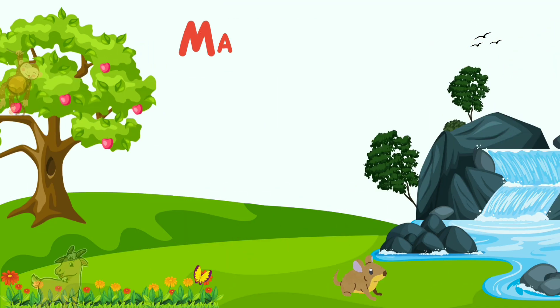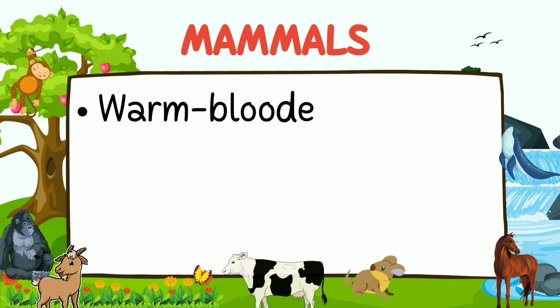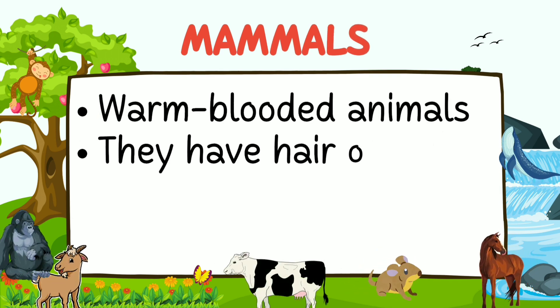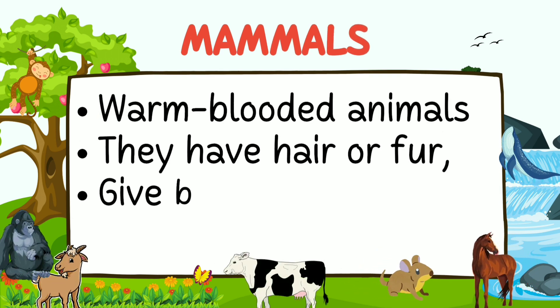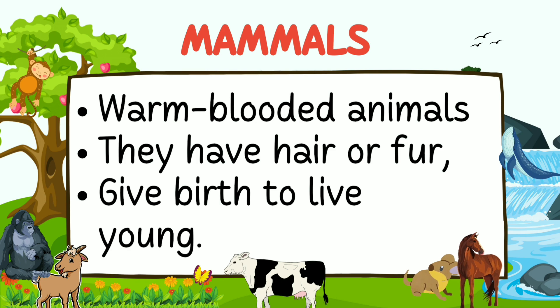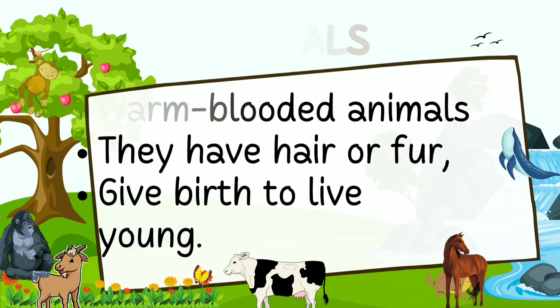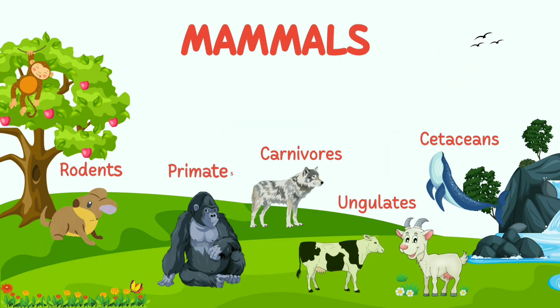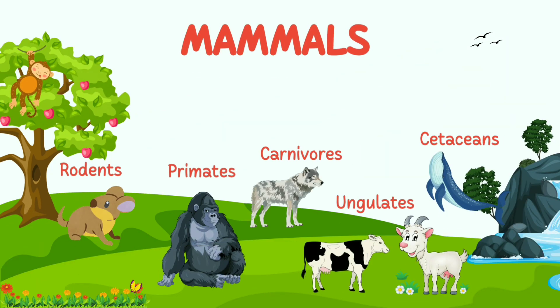Mammals are warm-blooded animals that have hair or fur and typically give birth to live young. They include primates, ungulates, carnivores, rodents, and cetaceans.